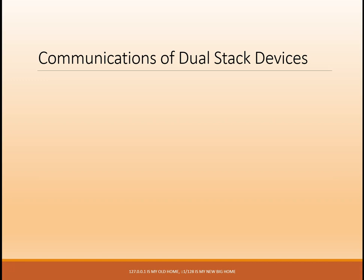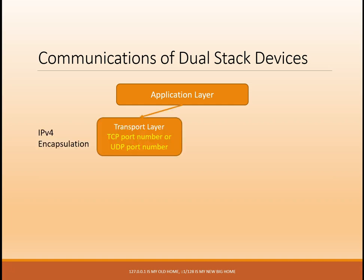Now let us see how two or more devices in a dual stack environment can communicate. When a dual stack device is communicating with an IPv4 device, it behaves like an IPv4-only device. When communicating with an IPv6 device, it acts like an IPv6-only device. The application layer inside the OSI model can be carried in a TCP or UDP segment, identified by the transport layer port number. These port numbers can be used in both IPv4 and IPv6 stacks.